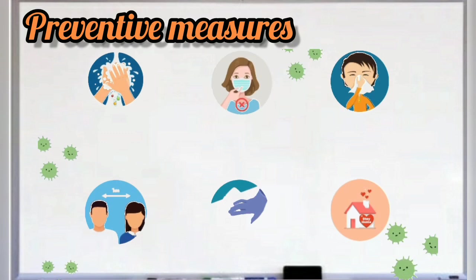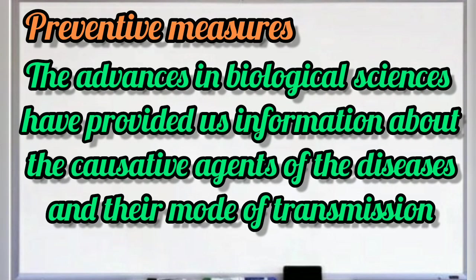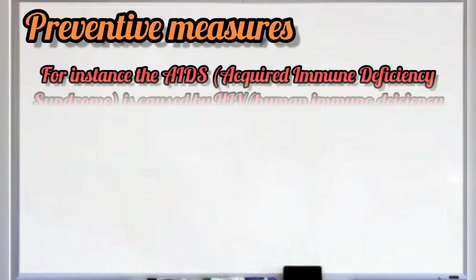First of all, we will study preventive measures. This is the best way for controlling disease. The advances in biological sciences have provided us information about the causative agents of disease and their mode of transmission — which agents cause a disease and how they are transmitted from one person to the other.